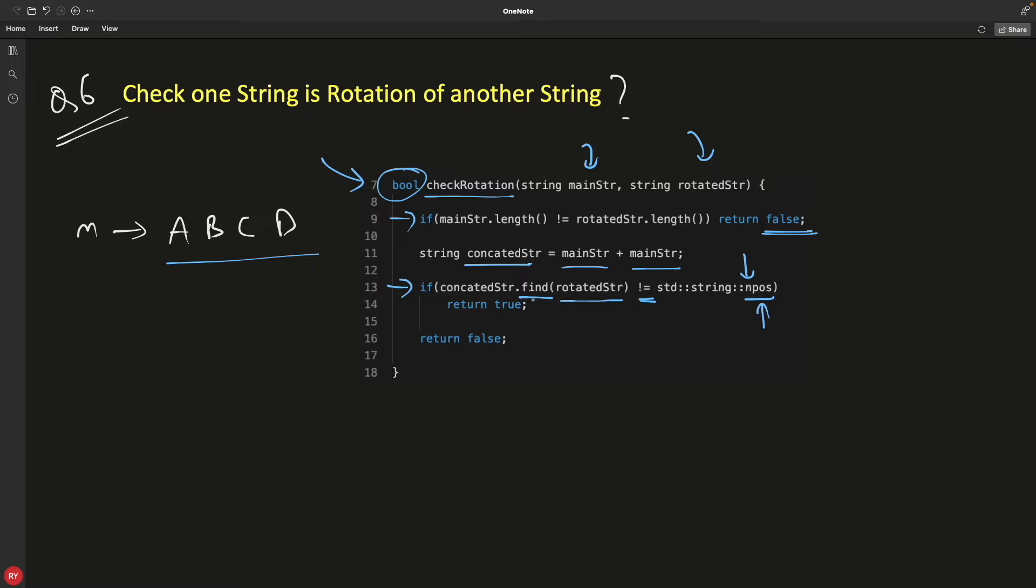So if it doesn't find anything, it returns this. So we have to check if it is returning this. I mean, if it is not returning this, then it found that rotated string in this concatenated string and we have to return true. That's it. Otherwise, false.